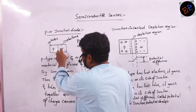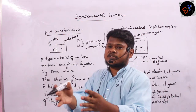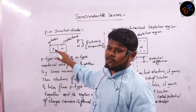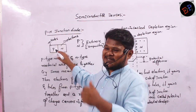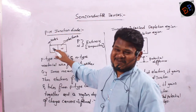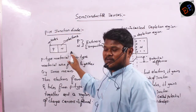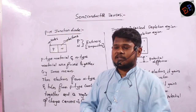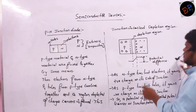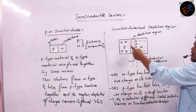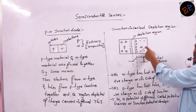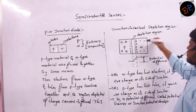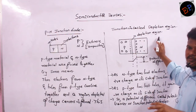So immediately when electrons and holes see each other, they start drifting towards each other. Electrons from the N-type drift towards the P-side, and holes from the P-side start drifting towards the N-side. When holes and electrons come near together, they recombine with each other. When they recombine, a junction forms. This region is called the depletion region. Why? Because here there are no charge carriers — no electrons and no holes.